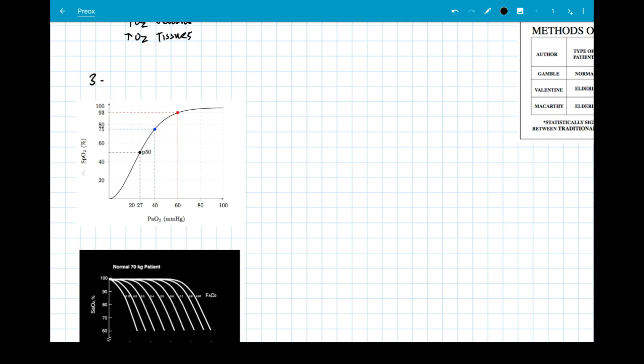As you move from a PaO2 from 100 to, let's say, 70, there is not much change in oxygen saturation. As the PaO2 drops, the oxygen saturation of hemoglobin dramatically drops once you get below a PaO2 of approximately 60. A PaO2 of 40 correlates with an oxygen saturation of 75%, and a PaO2 of 27 correlates with an oxygen saturation of 50%. So there is a dramatic drop once you get below about 90% oxygen saturation.